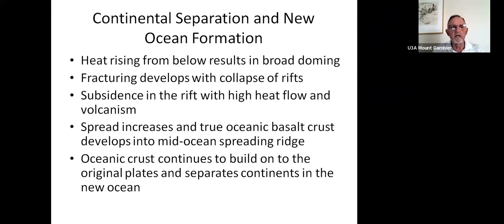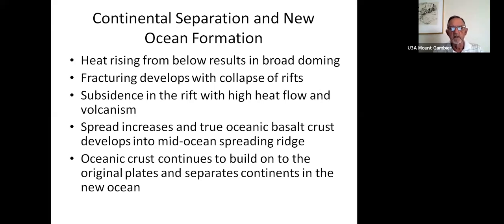Continental separation and new ocean formation is effectively due to heat rising from below and ponding or collecting under a supercontinent like Pangaea or Gondwana, and this results in broad doming and then fracturing. The collapse of rift zones and subsidence in the rift allows high heat flow and volcanism, and gradually the spread of the rift increases and true oceanic basaltic crust develops, with a mid-ocean spreading ridge forming. The oceanic crust continues to build onto the original plates and separates the continents with a new, enlarged plate.